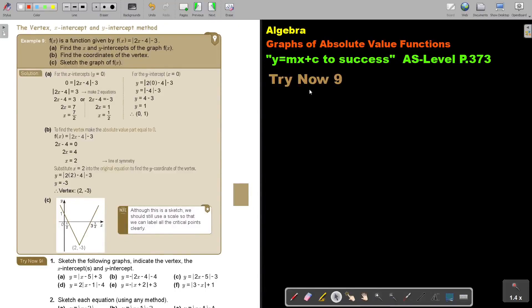In this video, we will continue with graphs of absolute value functions. You will find this on page 373 in the Namibia AS level mathematics textbook y equals mx plus c to success. Let's look at this other algebraic method, the vertex to find the x-intercepts, the y-intercept method.